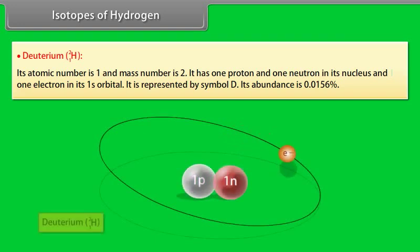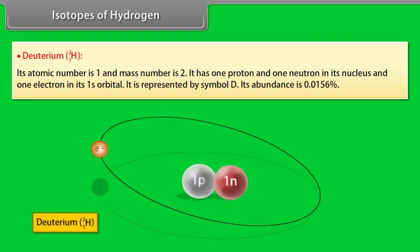Deuterium: Its atomic number is 1 and mass number is 2. It has one proton and one neutron in its nucleus and one electron in its 1s orbital. It is represented by symbol D. Its abundance is 0.0156%.